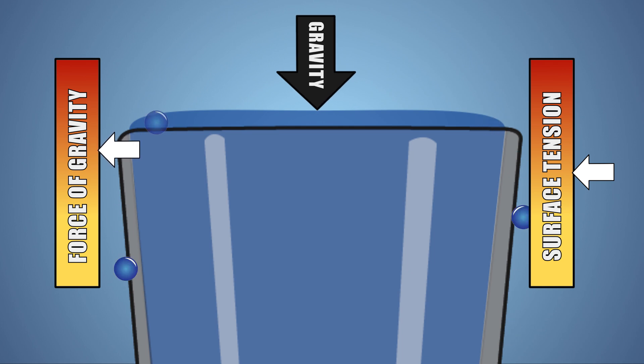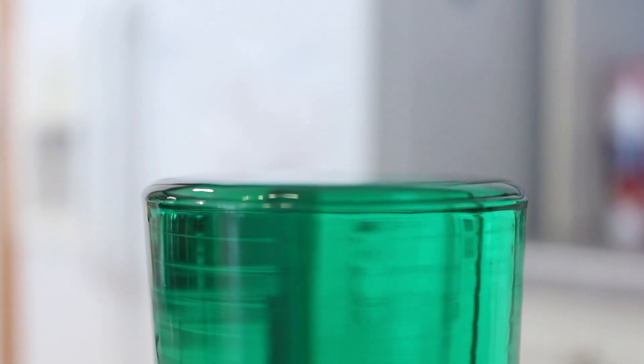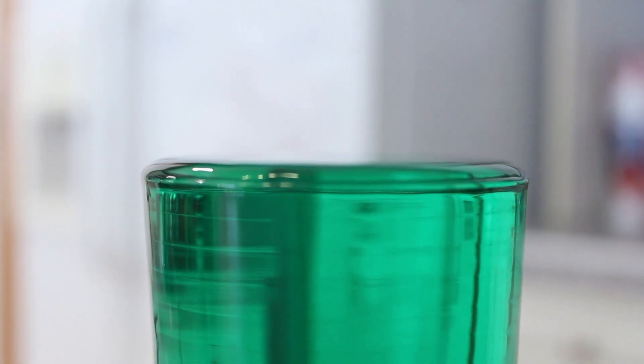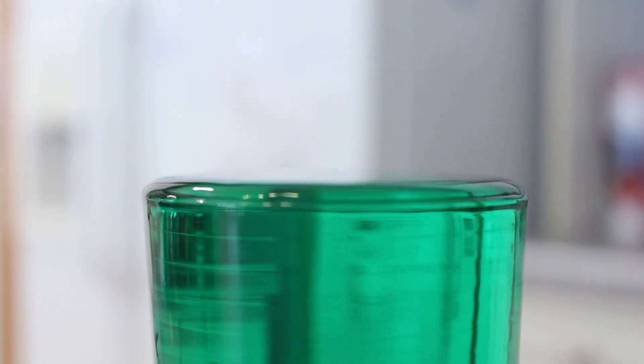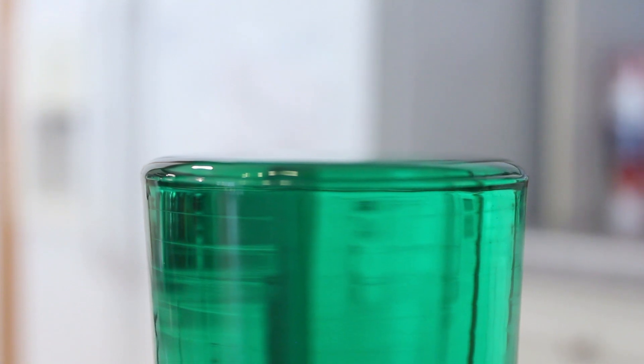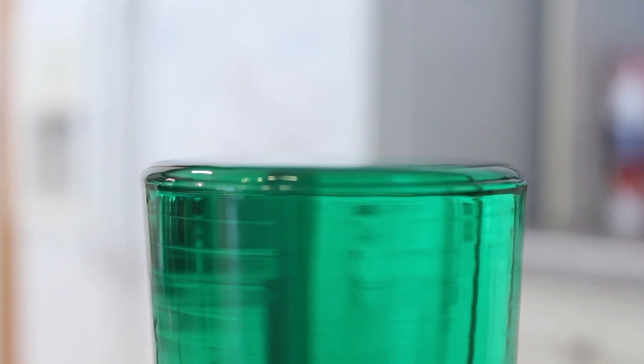Water will continue to spill out of the glass until the force of gravity and surface tension are equal. If you look at the dome of water from the side, you will notice that it has rounded edges at the rim of the glass and a flat top. The flat portion of the dome is created by gravity pushing down on our dome of water.